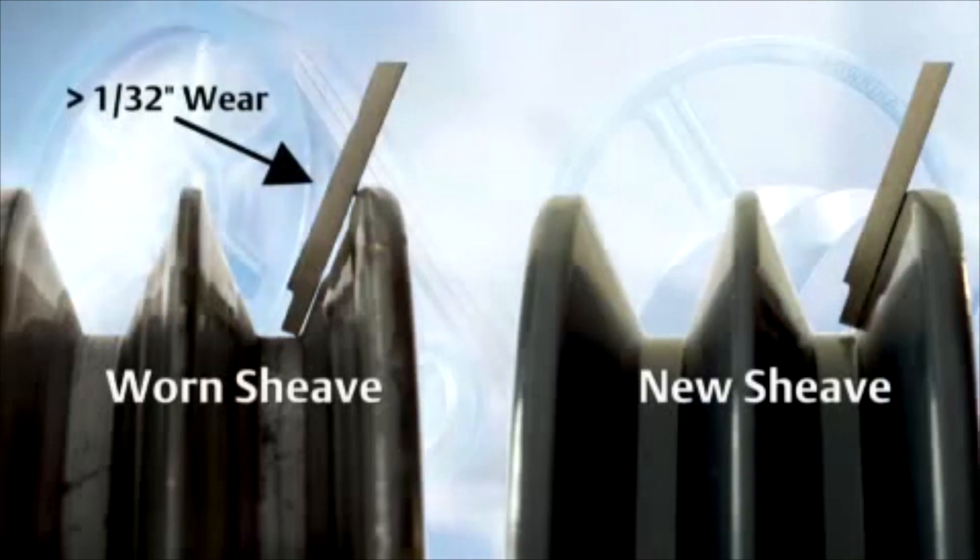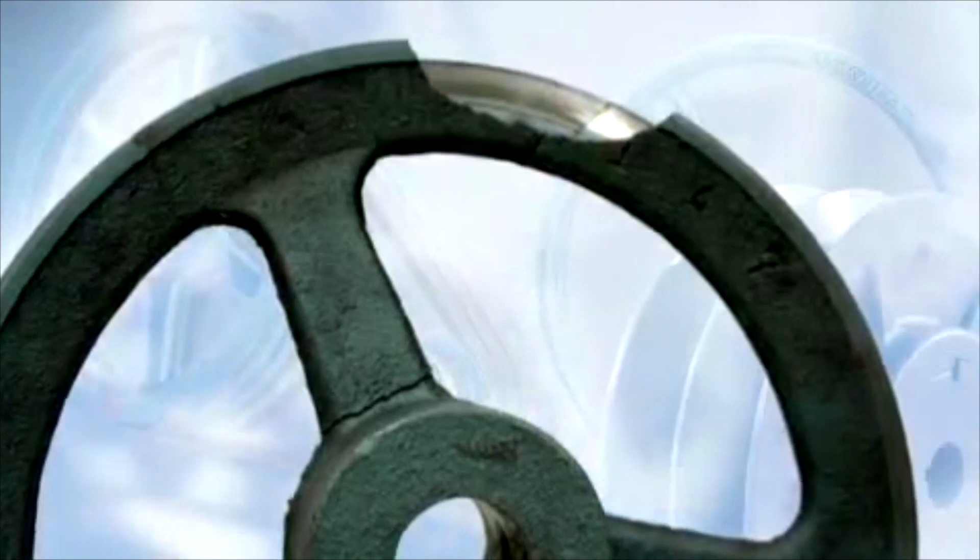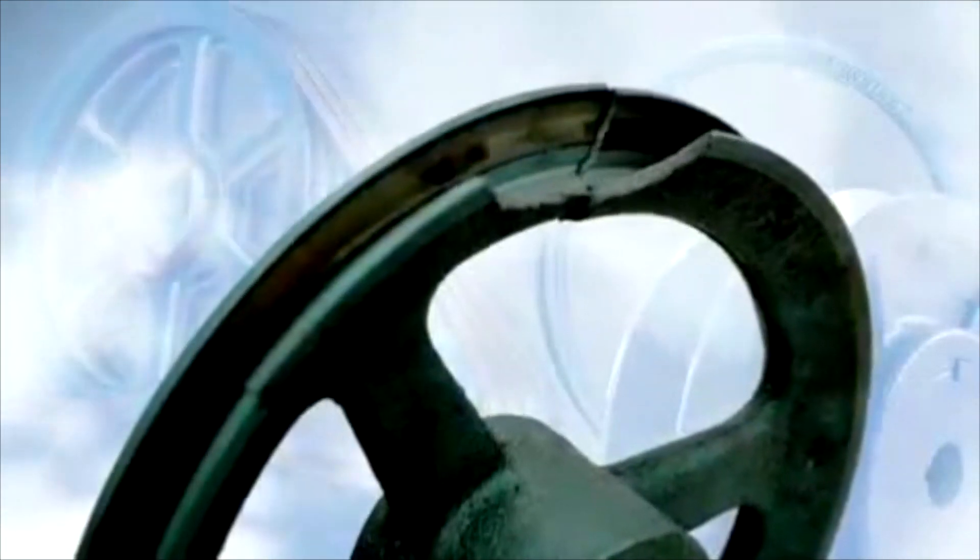A small straight edge can also be used to inspect for worn groove sidewalls. Shivs should also be replaced if there are any broken flanges or chips around the outside diameter.